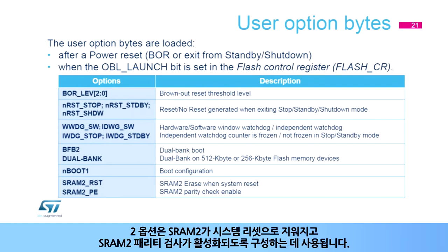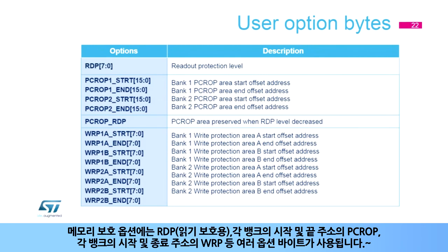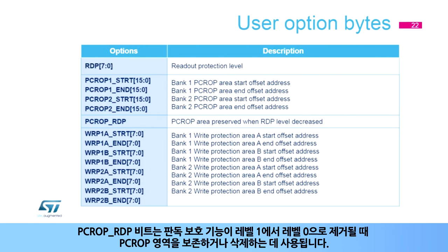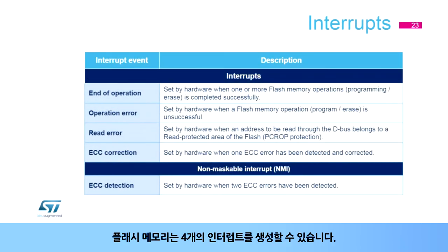Two options configure if the SRAM2 is erased with the system reset and to enable the SRAM2 parity check. Several option bytes are used for memory protection: RDP for readout protection, PCROP for the start and end addresses of each bank, and WRP for the start and end addresses for each of the two areas of each bank. The PCROP RDP bit is used to preserve or erase the PCROP area when the readout protection is removed from level 1 to level 0.